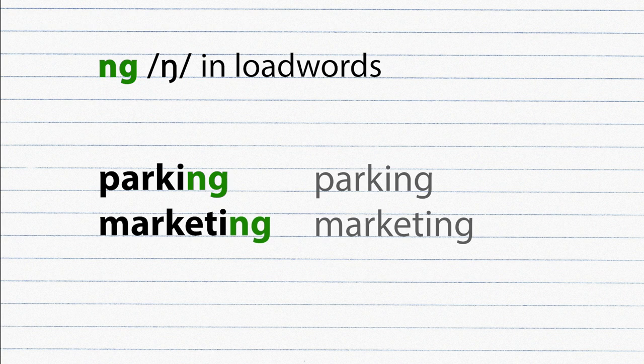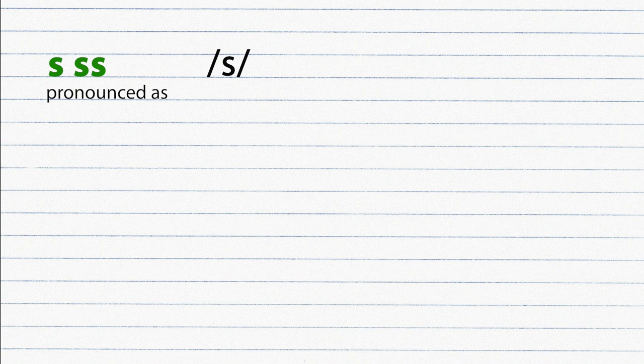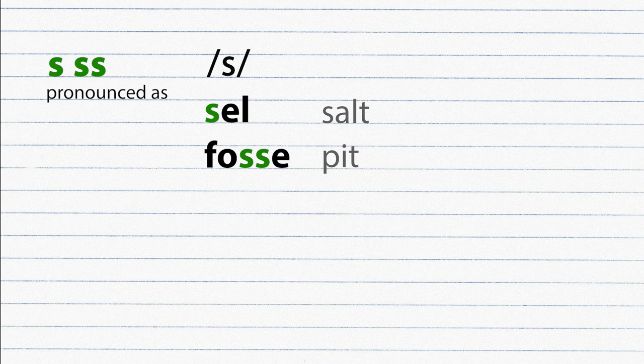Parking, marketing. S and double S are pronounced as S. Sel, fosse. S often between two vowels is pronounced as Z. Rose, oser, abusif.